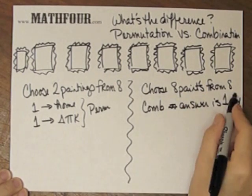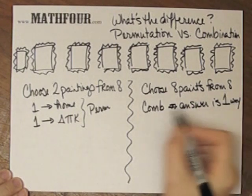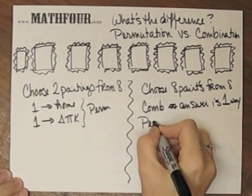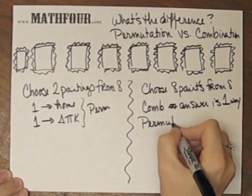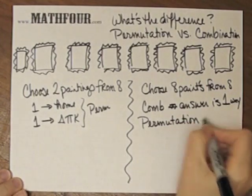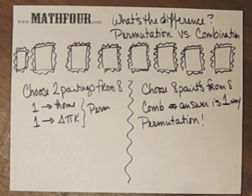So if you see anything where you choose eight from eight, or one number from the same number, this is usually always a permutation. Because if it wasn't, the answer would be one, and that's kind of a dumb problem, especially in a textbook or even in real life. How many ways can I choose three different cans of beans from three different cans of beans? Well, there's one way. Take them and go check out already.